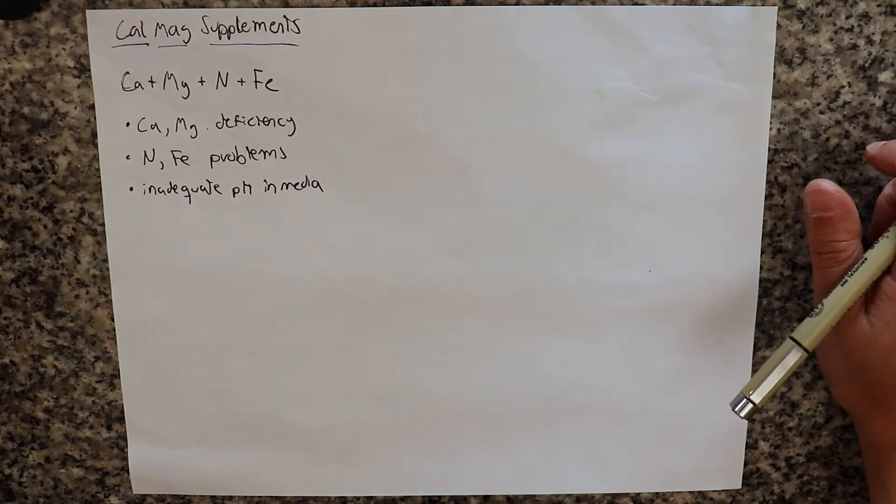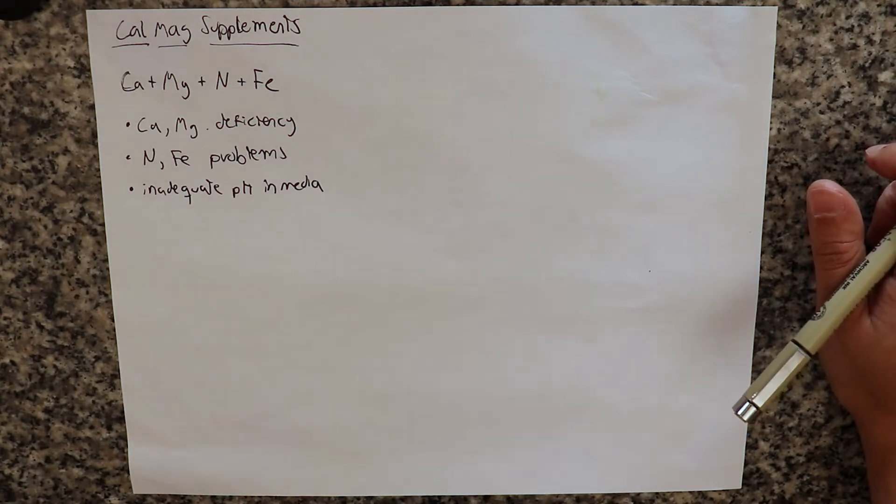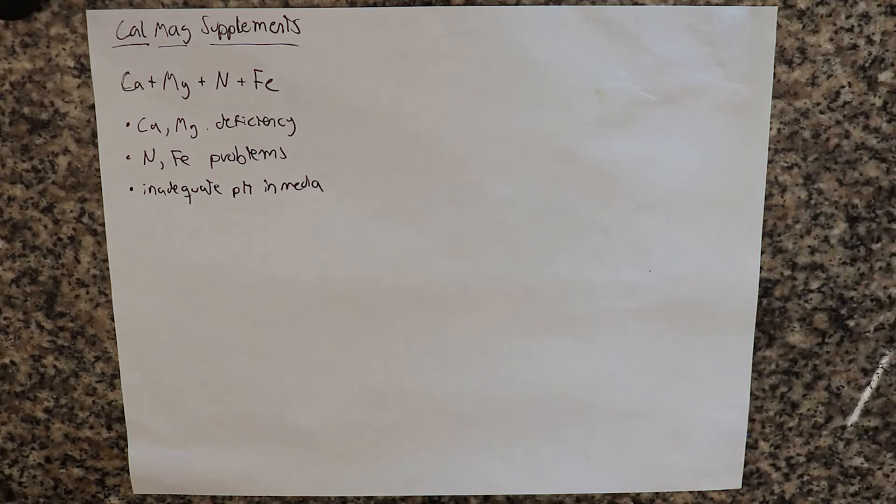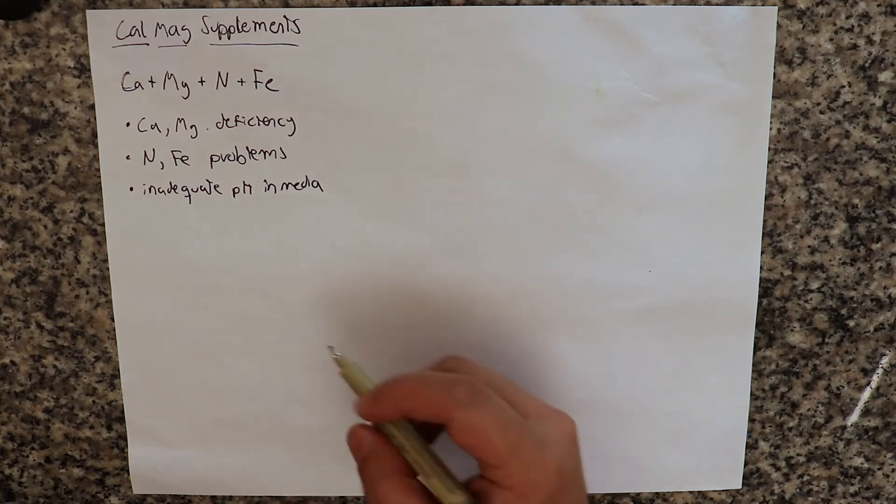If you did an analysis of tissue, you would see that calcium and magnesium values are normal, but you would see a deficiency. Now, let's talk a little bit about the makeup of these nutrients, what is actually the proportion that these things are in.